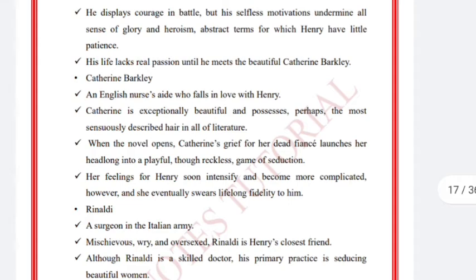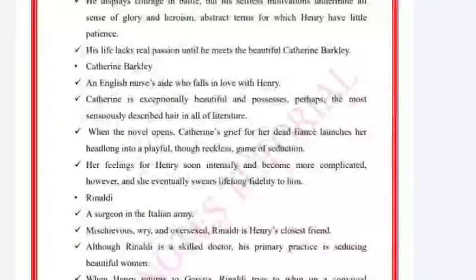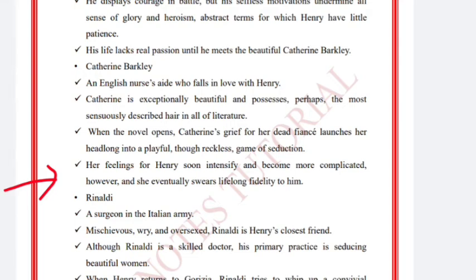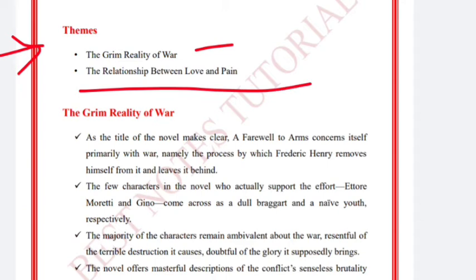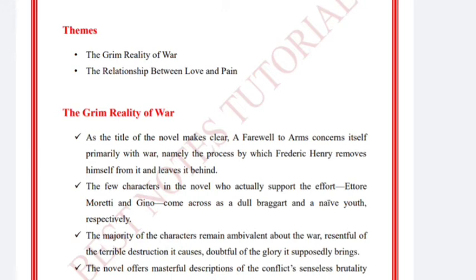When the novel opens, Catherine's grief for her dead fiancé launches her headlong into a playful though reckless game of seduction, and her feelings for Henry soon intensify and become more complicated. However, she eventually swears lifelong fidelity to him. The themes of the work are the grim reality of war and the relationship between love and pain.